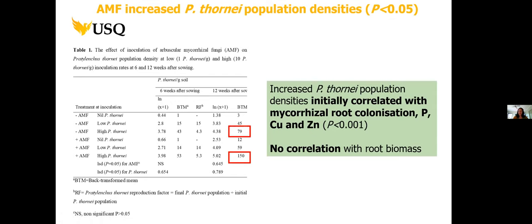Unfortunately, while we loved the AMF and rhizobia interaction, AMF actually increased the population density of Pradylenchus thornei. Without AMF at an initial inoculation rate of 10 per gram, the back-transformed mean was about 79. When AMF was added, we saw a doubling — twice the population density of Pradylenchus thornei in mycorrhizal mungbean. We correlated this with mycorrhizal root colonization and the concentration of phosphorus, copper, and zinc — initially linking the response to plant nutrition — but there was no correlation with root biomass.